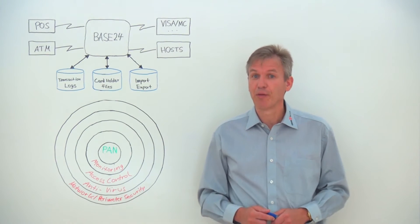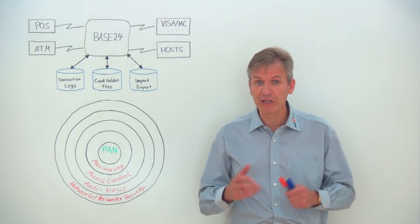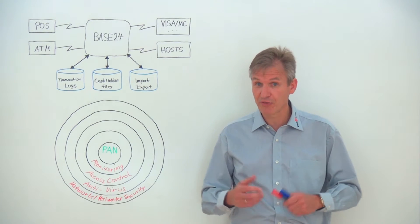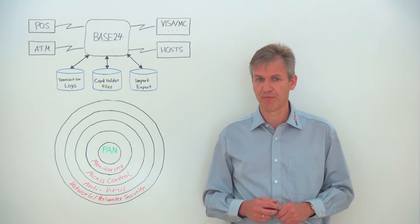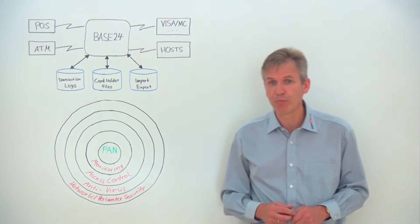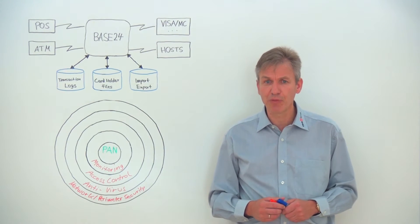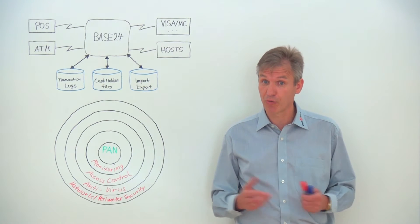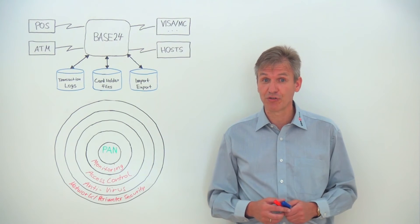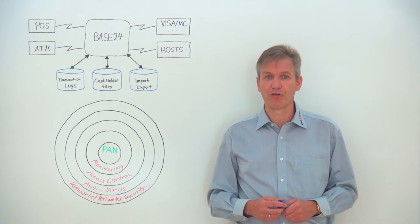Well, historically, Base24 users could not meet a core requirement explicitly stated in the PCI standard. This is requirement 3.4, which demands you to render the PAN unreadable anywhere where it is stored, by encryption, tokenization or other suitable mechanisms.